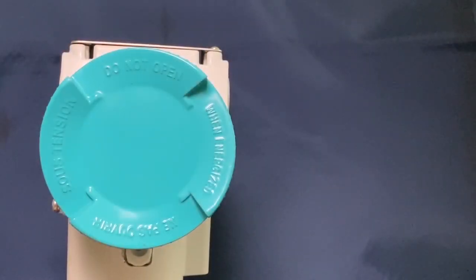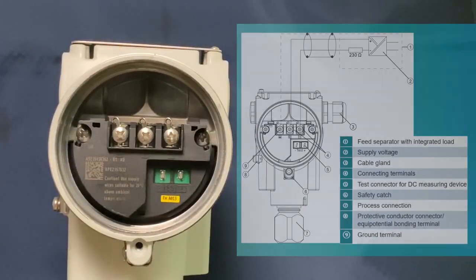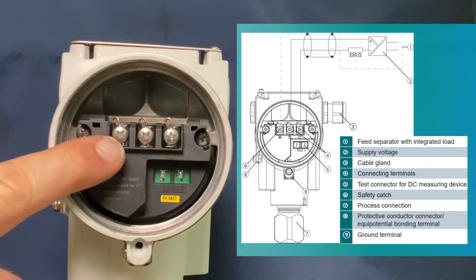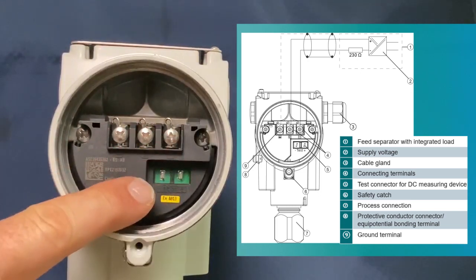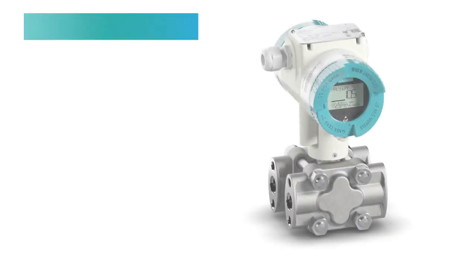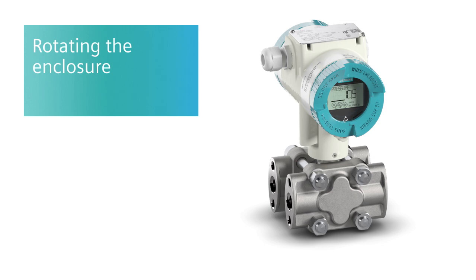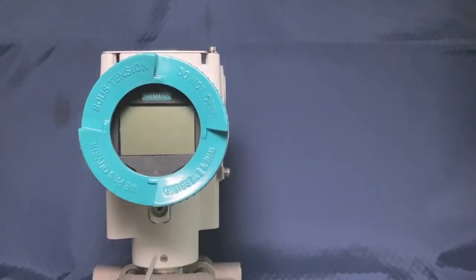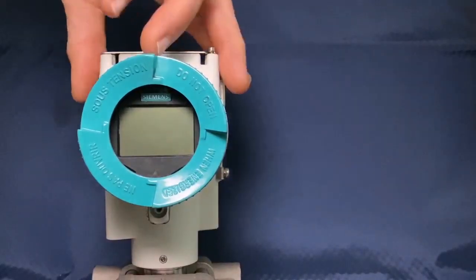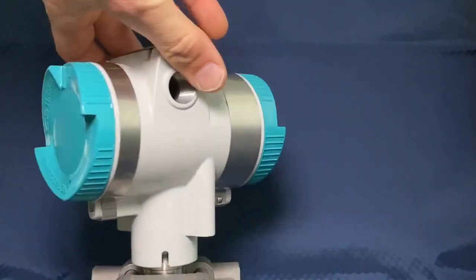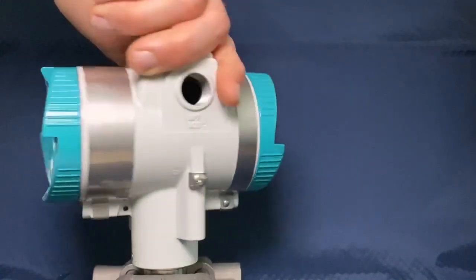Now we have a look at the electrical terminal compartment. Here we have the connecting terminals for earthing and the power supply. At the bottom right there is a test connector where you can measure the loop current. After opening the retaining screw you have the possibility to rotate the enclosure by 360 degrees.